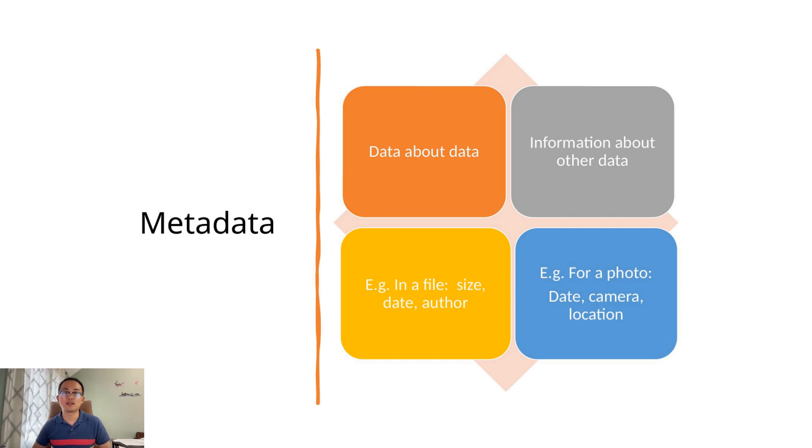Now let's talk about metadata, which simply means data about data. Metadata gives us extra information to help us understand other data. For example, a photo's metadata might include the date it was taken, the camera type, or the location. For a dataset, metadata might describe what each column means, what units are used, or where the data came from. Even a document file can have metadata, like its file size, author, or last modified date. Metadata helps us understand the context and structure of our data.